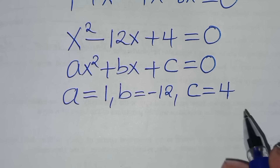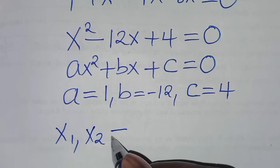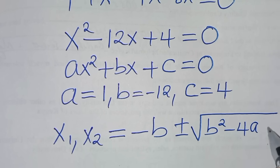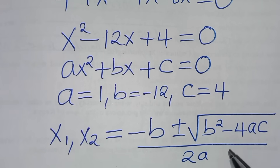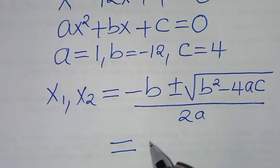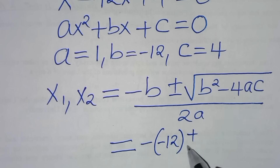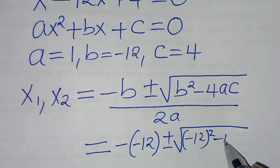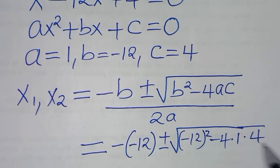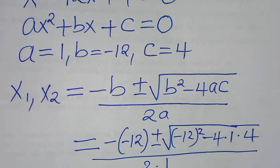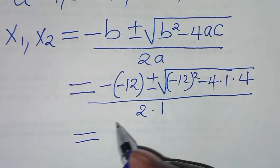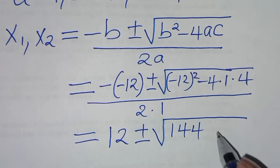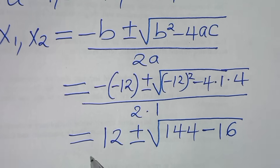Now applying the quadratic formula, we have x1 and x2 equal to negative b plus or minus the square root of b squared minus 4ac, all divided by 2a. Substituting the values of a, b, and c: we get negative negative 12 plus or minus the square root of negative 12 squared, subtract 4 times 1 times 4, all divided by 2 times 1. So we have 12 plus or minus the square root of 144 minus 16, where 144 minus 16 is 128, all divided by 2.